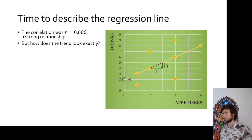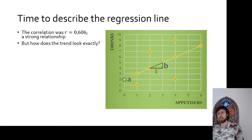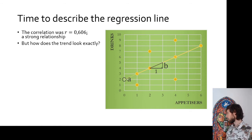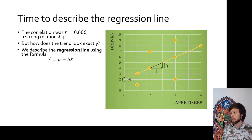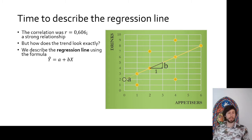But how does the trend look exactly? So in this case, how many more drinks can we expect a customer to order with every additional appetizer that we serve them? So what we need to do is we need to come up with an expression for the regression line. This would be the so-called regression equation, and its general shape looks like this.